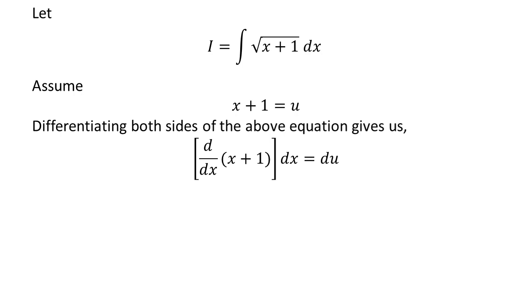Taking differential of both sides, we get derivative of x plus 1 with respect to x times differential of x is equal to differential of u. As we know, derivative of x is 1 and derivative of constant 1 is 0, so differential of x is equal to differential of u.